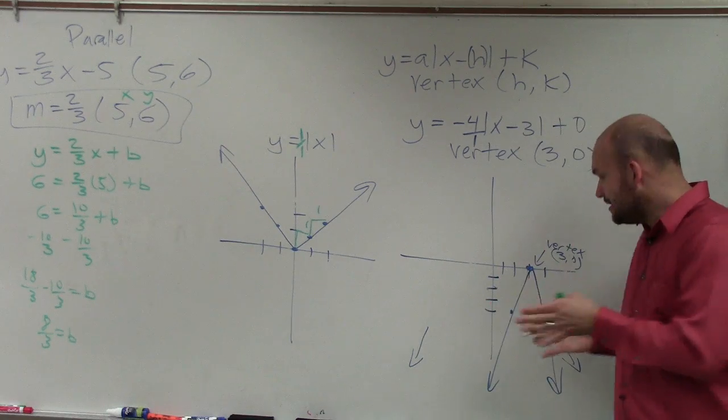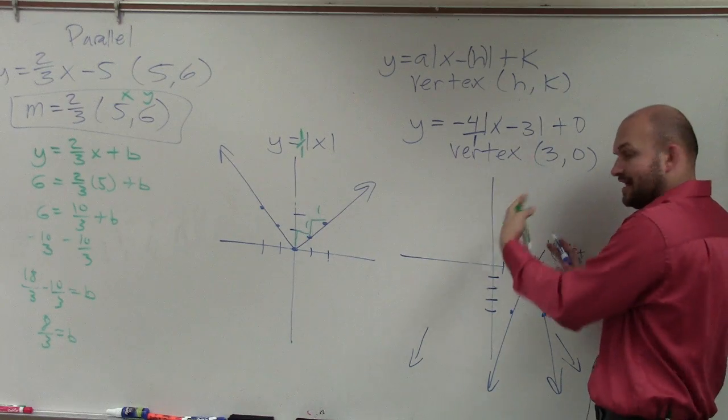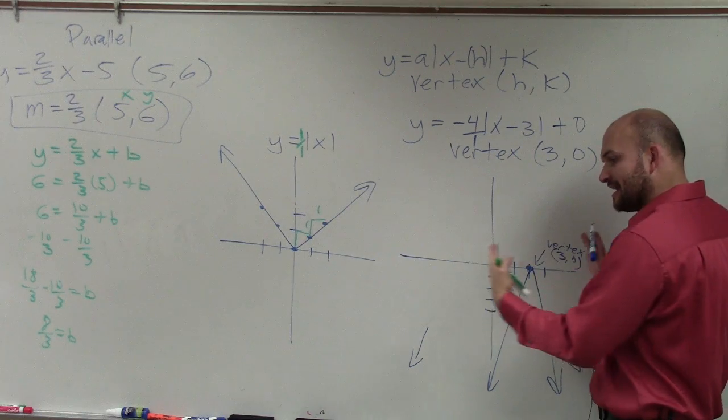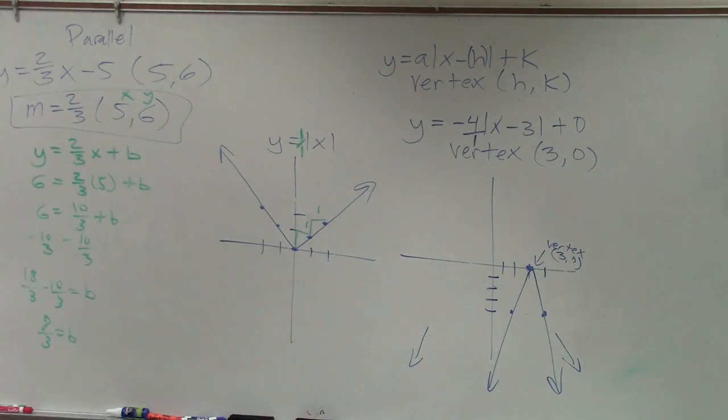And you can see that since the absolute value of this number is greater than 1, forget about the negative, but since it's large, you can see that that compressed it horizontally, right? Or vertically stretched it, whatever you want to think about it as.